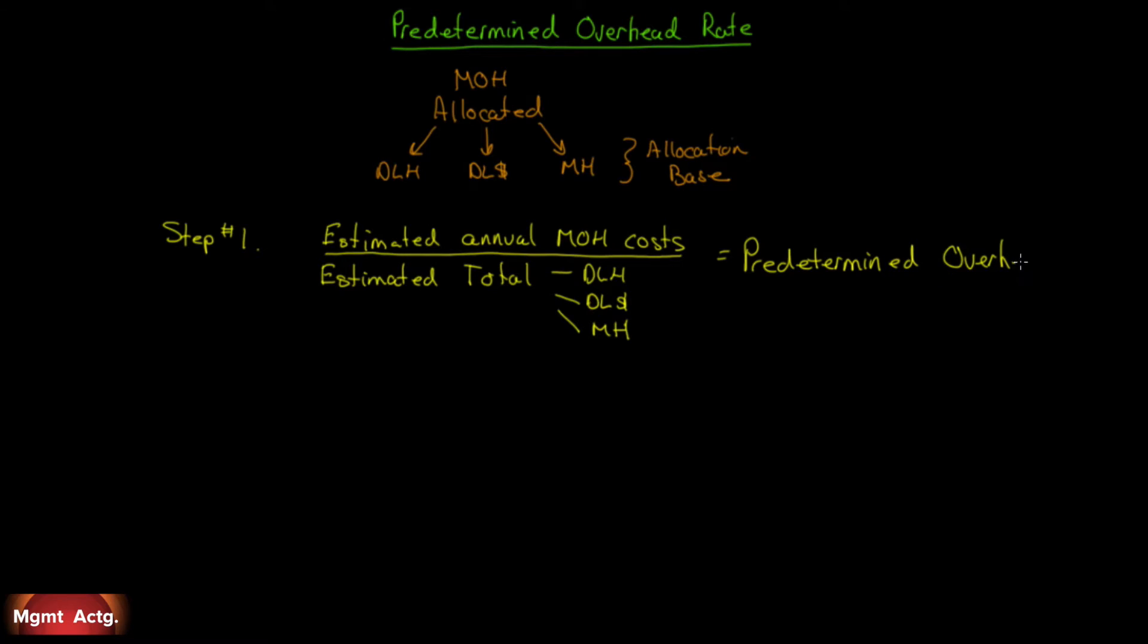It might be $7. That means for every job that uses direct labor hours, every direct labor hour will also be charged another $7 of overhead. If it's direct labor dollars, for every dollar there might be 110% of that cost is overhead. If it's machine hours, it's per machine hour.